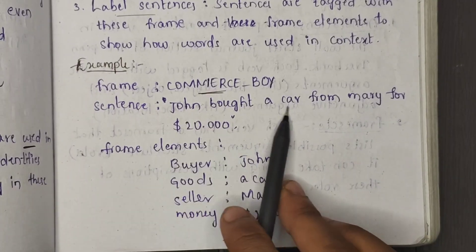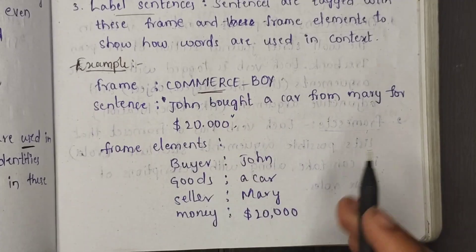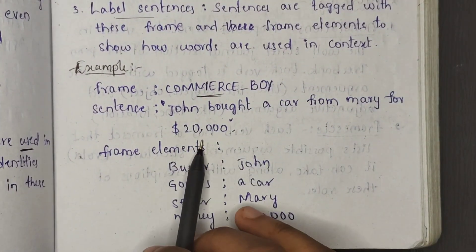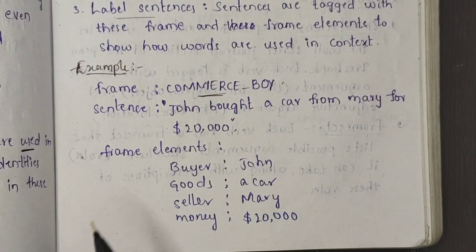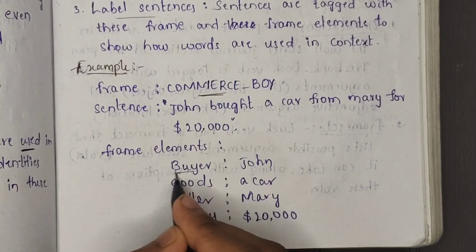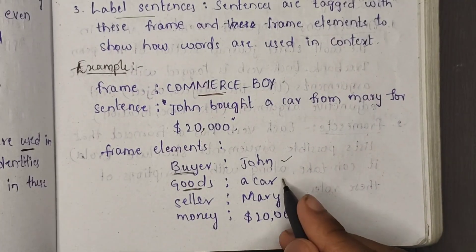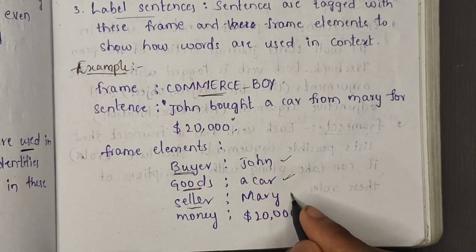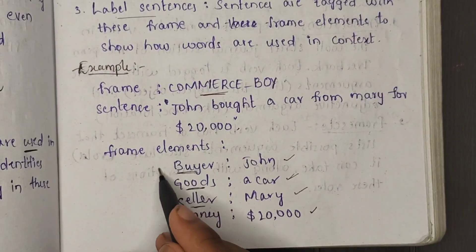For example, consider the sentence: 'John bought a car from Mary for twenty thousand dollars.' Here, the frame elements include: John as the buyer, Mary as the seller, the car as the goods, and twenty thousand dollars as the price. These are the frame elements in this FrameNet example.